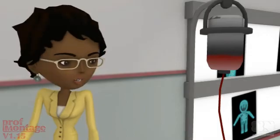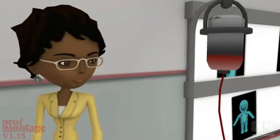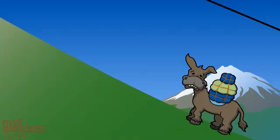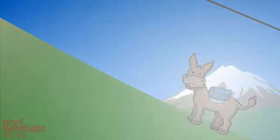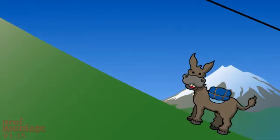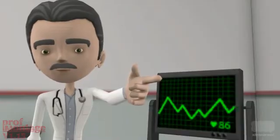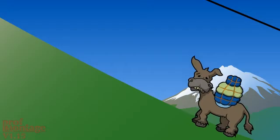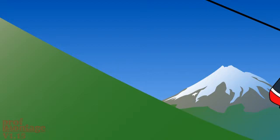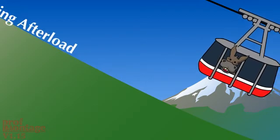So where does the donkey fit in? If the donkey is struggling to get up the hill, you can make it easier by easing the load off its back — reducing preload. Or by showing it an easy way up the hill — reducing afterload.